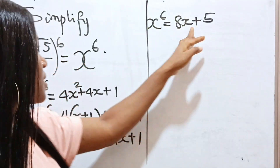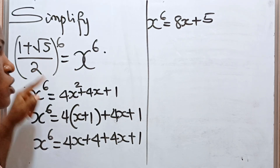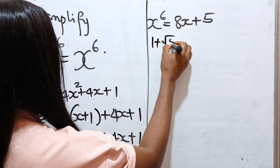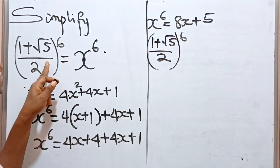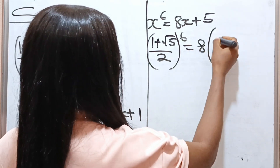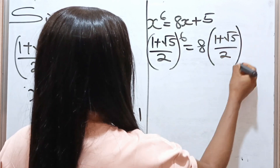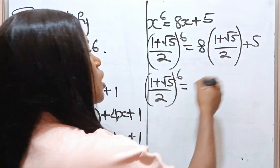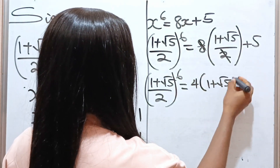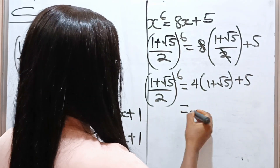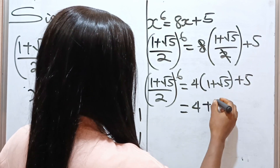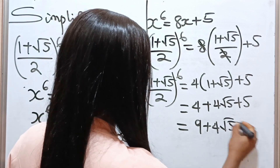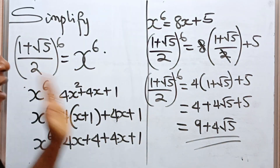Now remember that our x is (1 + √5) divided by 2. So we substitute: ((1 + √5)/2)⁶ equals 8 times ((1 + √5)/2) plus 5, which simplifies to 4(1 + √5) plus 5. Expanding: 4 times 1 is 4, 4 times √5 is 4√5, plus 5. So 4 plus 5 is 9, giving us 9 plus 4√5. This is the simplified answer.